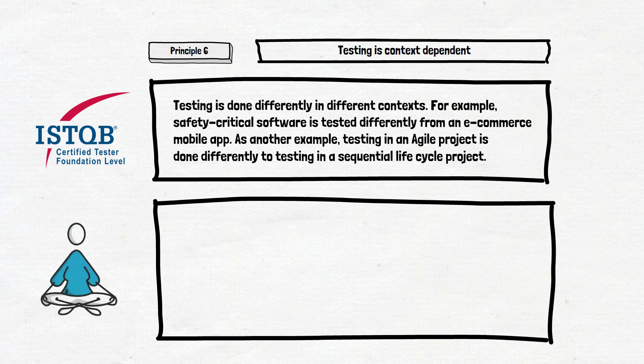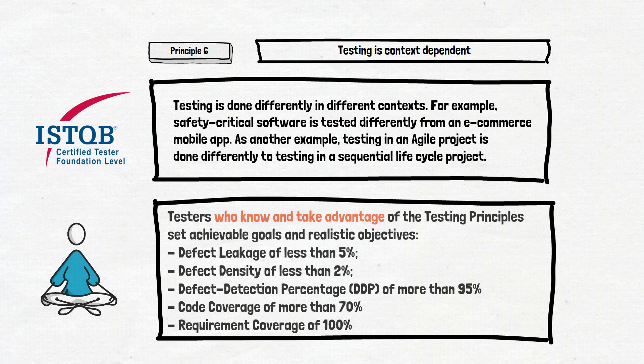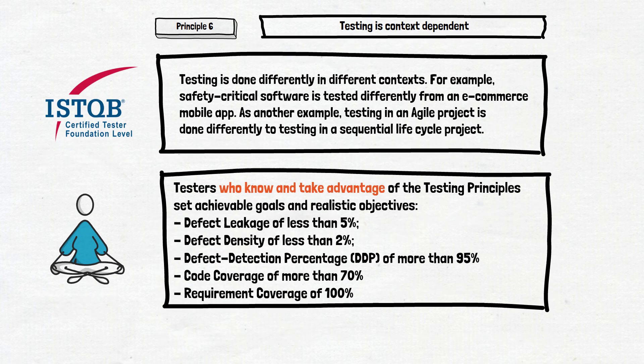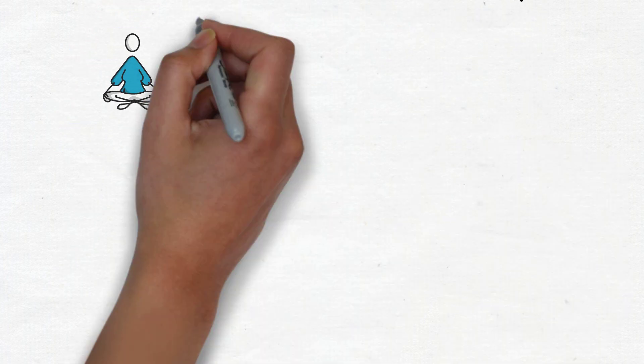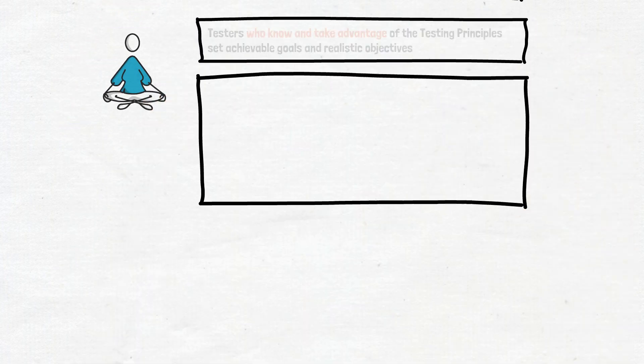In previous videos, we discussed that testers who know and take advantage of the testing principles set achievable goals and realistic objectives, and provided examples of those goals. The case is, the goals are not universal. You can't set the same goals for all projects.